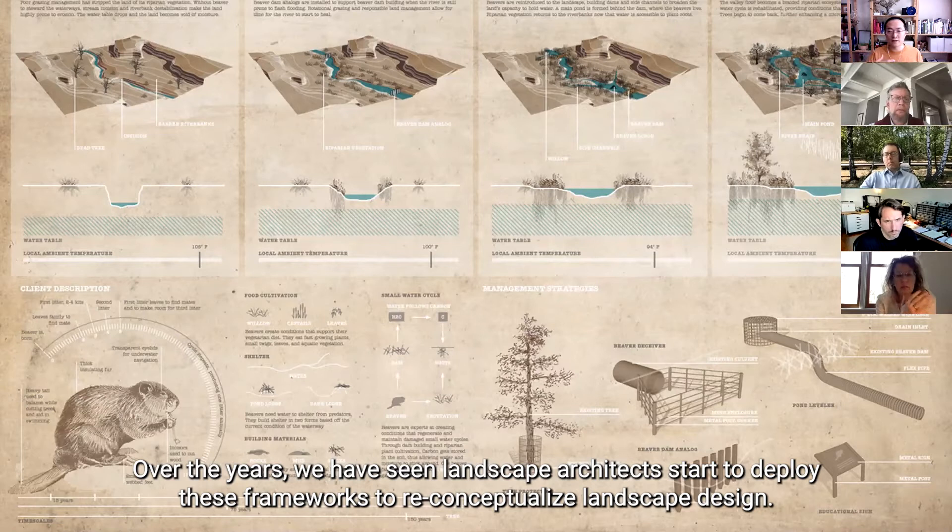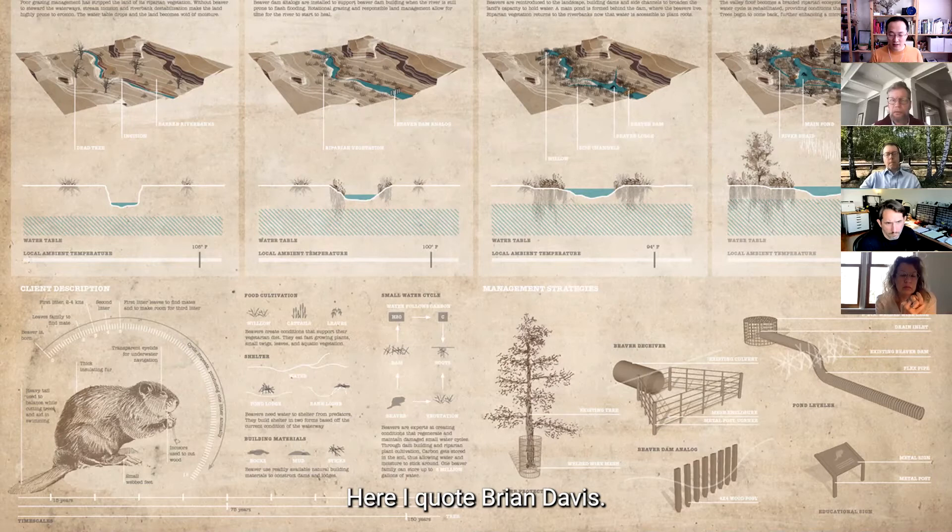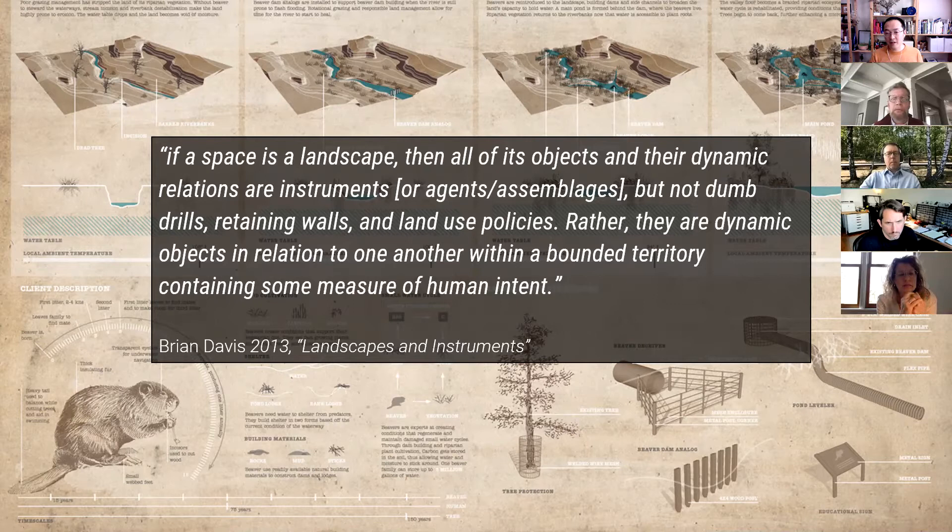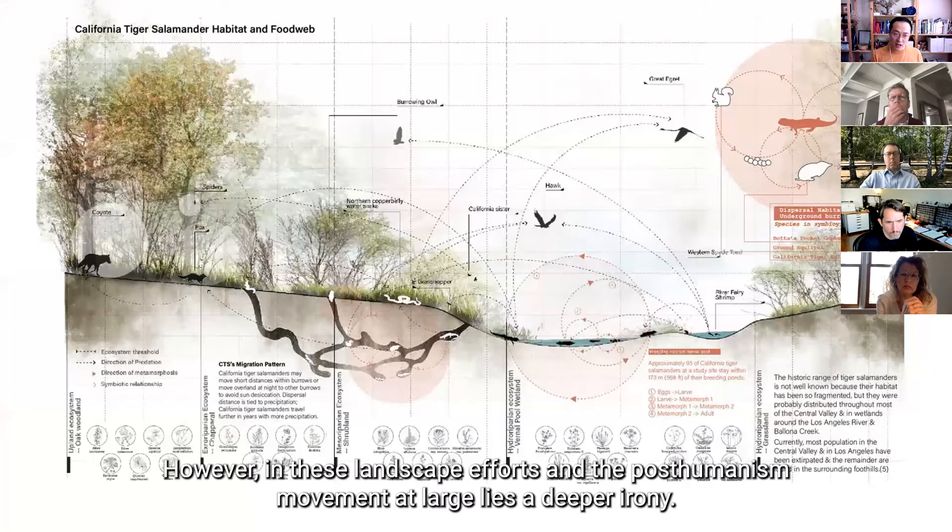So over the past few years, we have seen landscape architects start to deploy these frameworks to reconceptualize landscape design. And here I quote Brian Davis and he says, if a space is a landscape, then all of these objects and their dynamic relations are instruments, but not dumb drills, retaining walls and land use policies. Rather, they are dynamic objects in relation to one another within a bounded territory containing some measures of human intent.